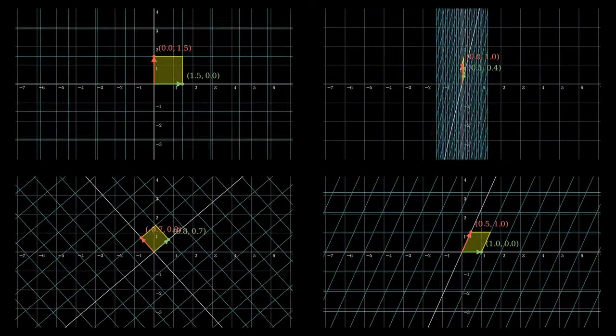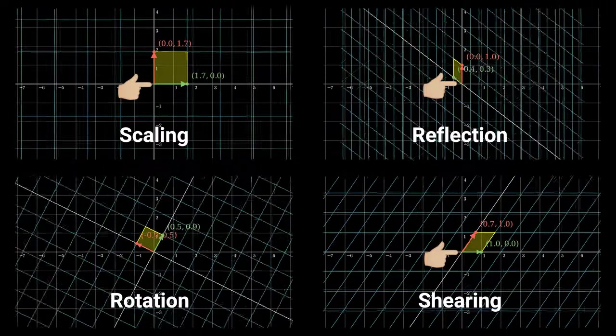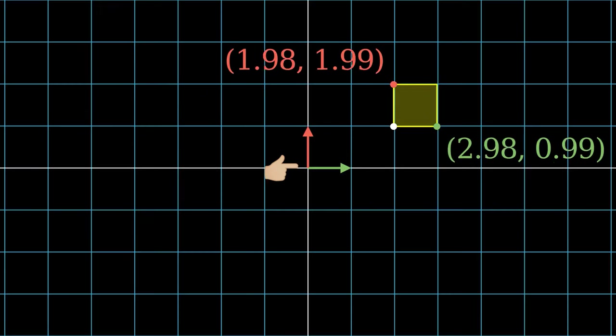From the last video, we know transformations like scaling, reflection, shearing, and rotation are not leaving the origin, so it can be seen as applying matrix vector multiplication. We exclude translation from those matrices since it leaves the origin.